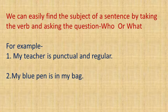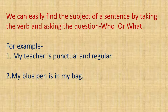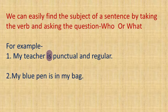We read in the previous slide that what we speak about in the sentence is called subject. We can also find the subject of a sentence by picking the verb and asking the question, 'Who or what?' Let us see the first example: 'My teacher is punctual and regular.' We pick out the verb and ask the question, 'Who or what?' What is the verb in this sentence? It is 'is.'